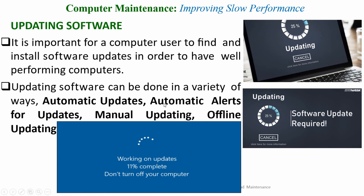Another way to increase the speed of your computer is updating software. It is important for a computer user to find and install software updates in order to have a well-performing computer. Updating software can be done in a variety of ways: automatic updates, automatic alerts for updates, manual updating, and offline updates. This is a typical example of Windows updates — the update has been downloaded and is being installed. Here is another example of a software update.